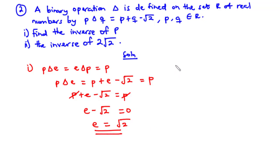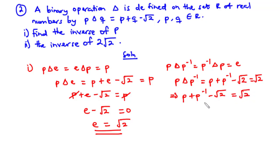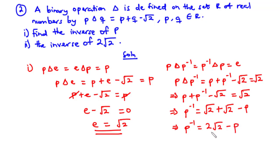Now for the inverse, p delta p-inverse equals p-inverse delta p equals the identity element. Using the operation, p delta p-inverse equals p plus p-inverse minus root 2 equals the identity element, which is root 2. Transposing p and negative root 2 to the right-hand side, p-inverse equals root 2 plus root 2 minus p, which gives p-inverse equals 2 root 2 minus p.